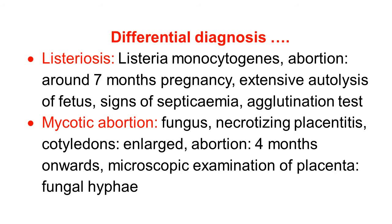Continuing with the differential diagnosis: listeriosis is caused by Listeria monocytogenes. Abortion occurs around 7 months of pregnancy. There is extensive autolysis of the fetus as a characteristic finding. Along with abortion, listeriosis is a septicemic disease, so signs of septicemia are observed. It can be confirmed by agglutination test.